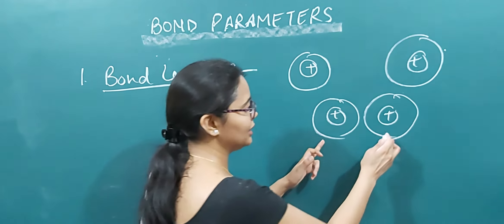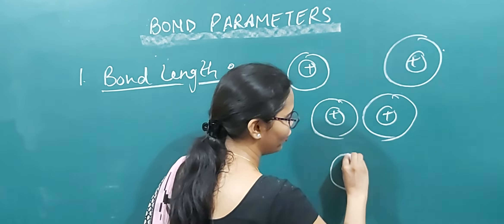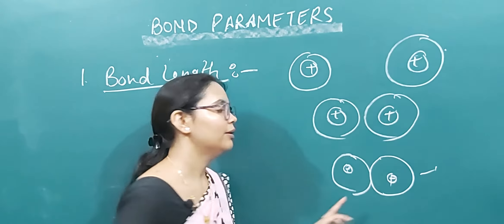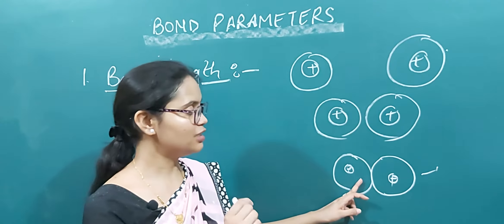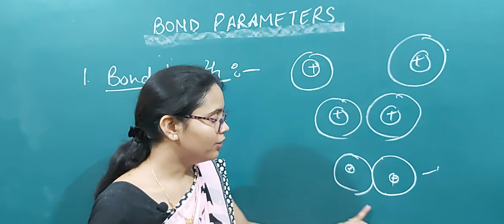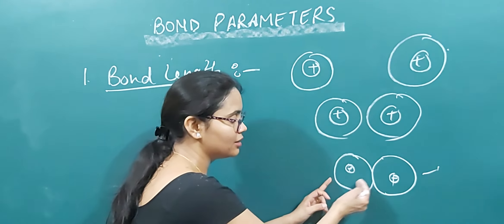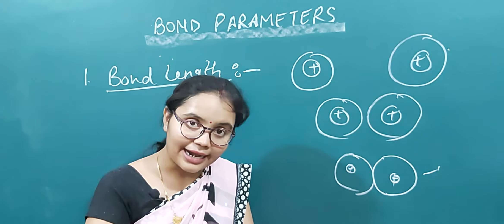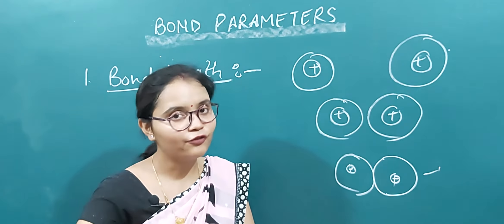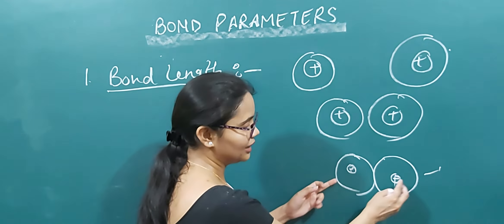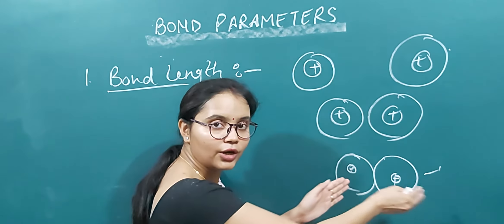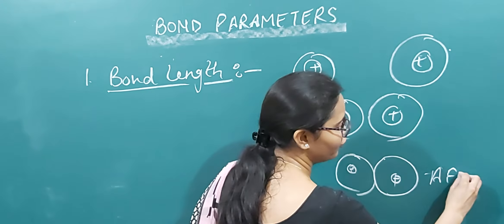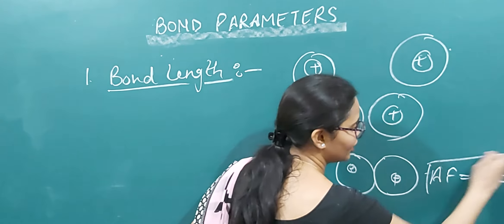When these two atoms come close to each other, initially the attraction force dominates over the repulsion force. This is the reason that these two atoms will combine with each other and form a molecule. But when the atoms are brought even closer, the repulsion force starts to act.